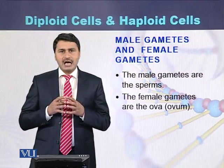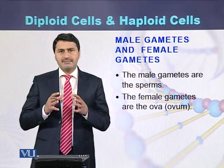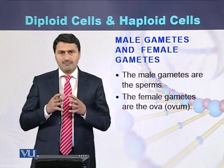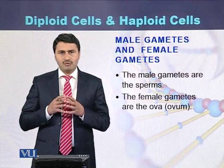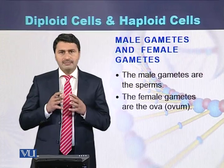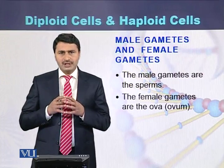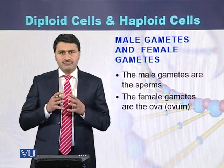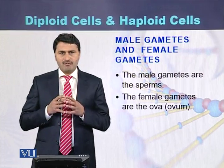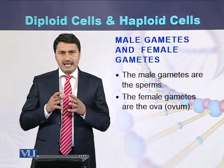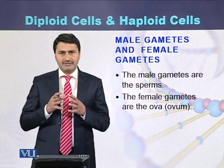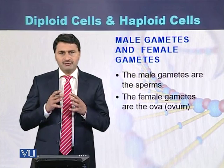Male gametes are called sperms, while the female gametes are called ova or eggs. The ova are produced in the female gonad, which is called the ovaries.